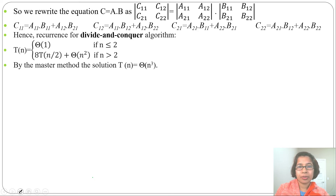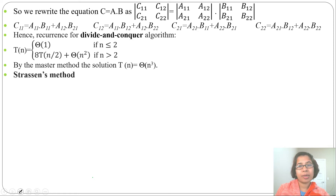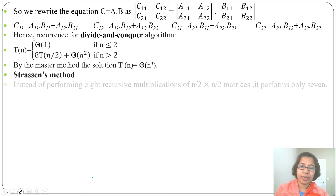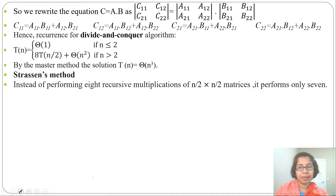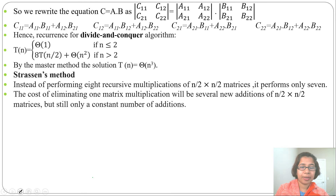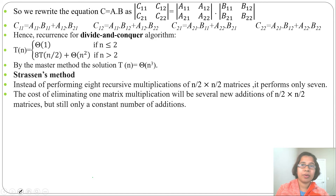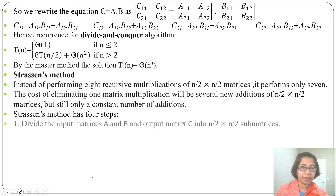Next is Strassen's method. Rather than 8 multiplications, Strassen suggested only 7 multiplications. The number of additions and subtractions increases, but instead of performing 8 recursive multiplications it performs only 7. The cost of eliminating one matrix multiplication is several new additions of n/2 × n/2 matrices, but still only a constant number of additions.